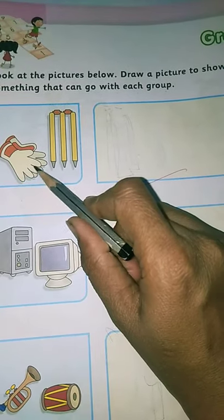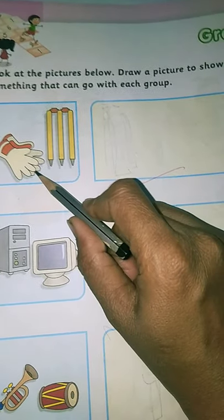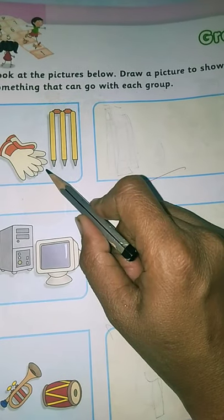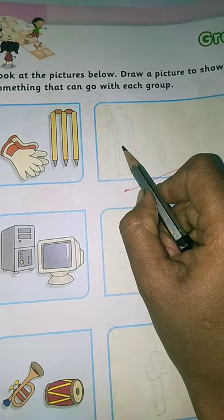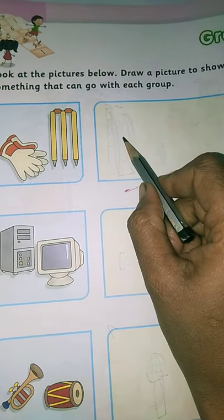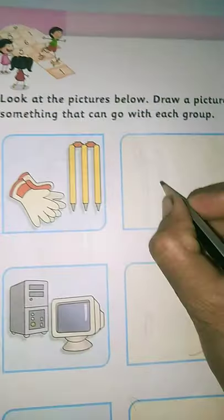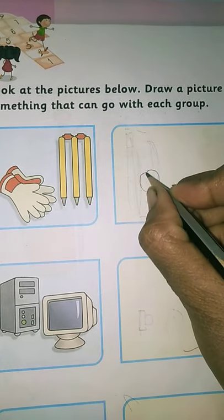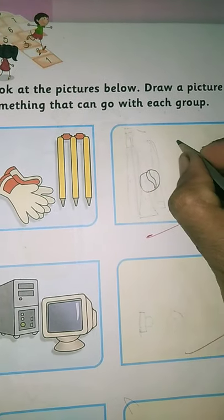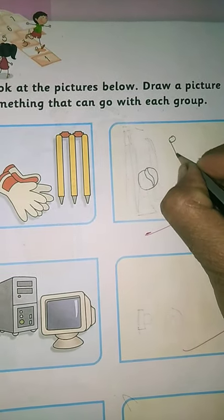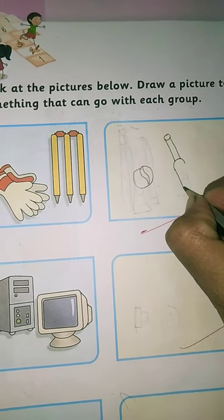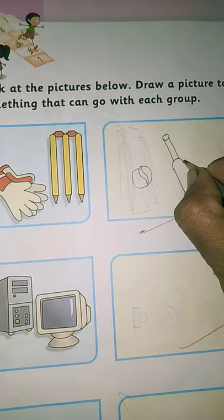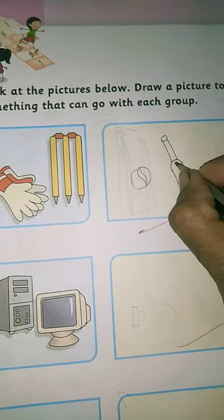The first one. See, what is given here? The stumps and hand gloves are given. Means, this is related with the game cricket. Now, again related to cricket, what we can draw here? Here, we can draw a bat, ball for example like this. You can draw a ball or you can draw a bat also. Like this, we can draw a bat also.